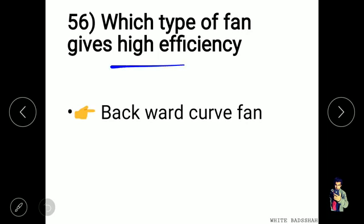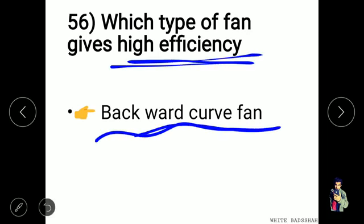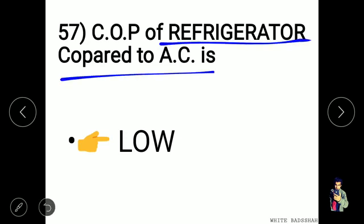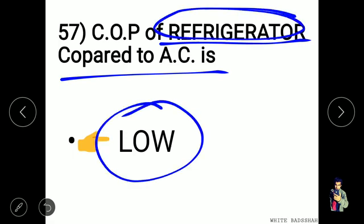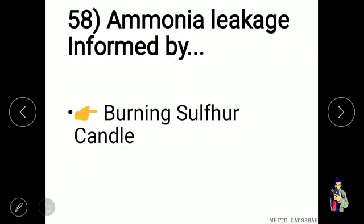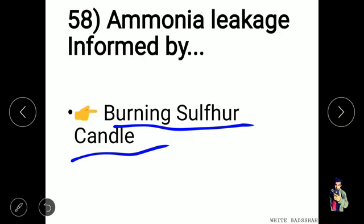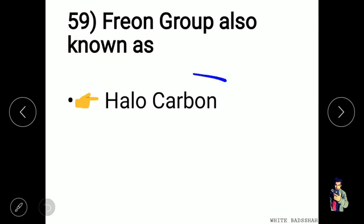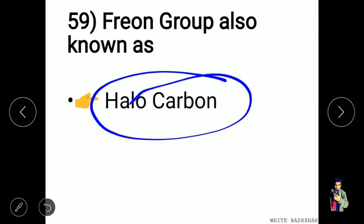The backward curved fan gives the highest efficiency of about 60 to 70%. The COP of a refrigerator is lower compared to an air conditioner. Ammonia leakage can be detected by a burning sulphur candle. The Freon group is also known as halocarbon.